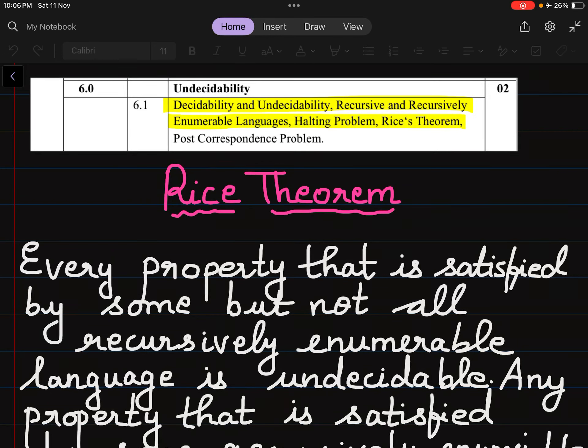This is lecture 4 of undecidability. We have already seen decidability and undecidability, recursive and recursively enumerable languages, and we have seen the halting problem. Now let's see Rice's theorem.